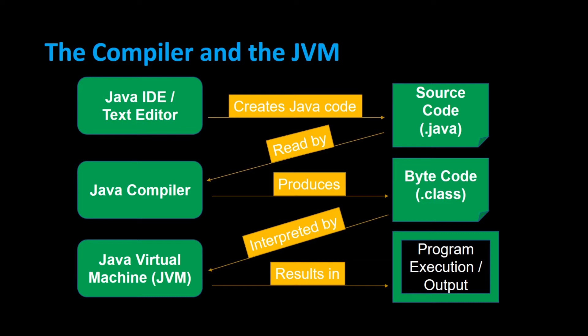This diagram basically shows your program from start to finish and what happens to it. Starting at the top left-hand corner, you create a Java program using an IDE such as Eclipse or a text editor, creating source code — the .java file. This file is read by the Java compiler, which checks for syntax errors, and after those are fixed, it compiles and creates the .class file, also called bytecode. This bytecode is then interpreted by the Java virtual machine, which produces your program execution — the results of your program.